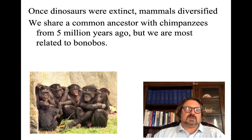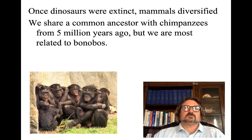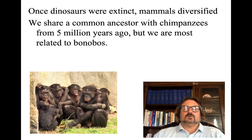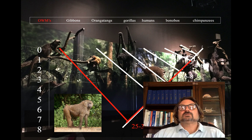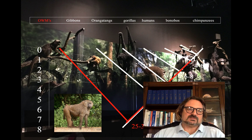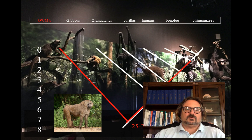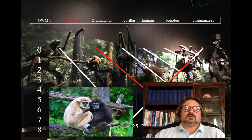We share common ancestry with chimpanzees from about five million years ago, but are most related to bonobos. Bonobos are akin to domesticated dogs while other primates are akin to wolves — bonobos are the most human-like, and seem most advanced when it comes to language acquisition and development. There was a common ancestor between us and old world monkeys 25 to 30 million years ago, including baboons, which we'll hear more about in Robert Sapolsky's lectures.